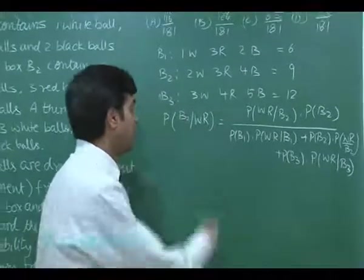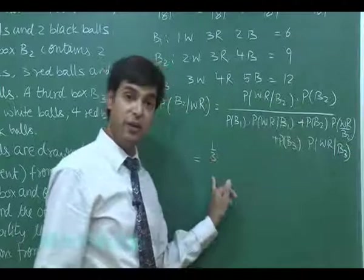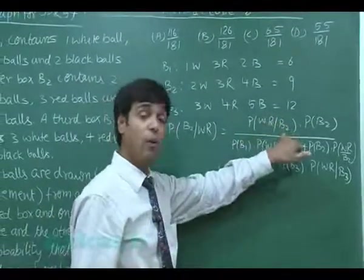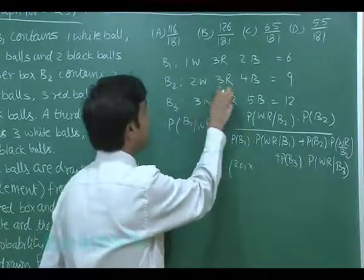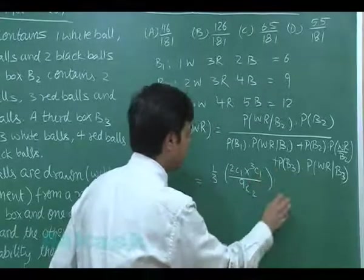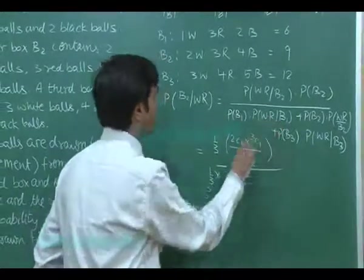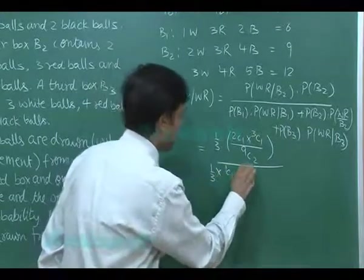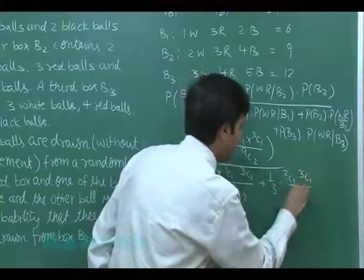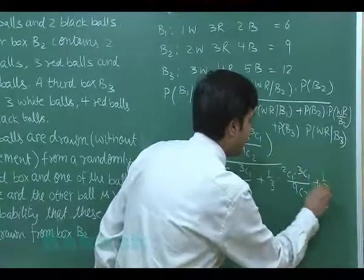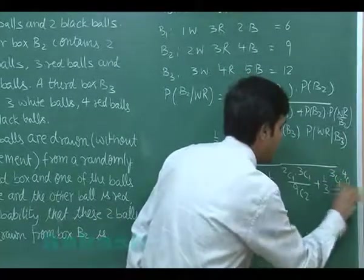Simply substitute this data. Probability of getting box 2 that is simply 1 by 3. White and red from box 2, B2 means 2C1 into 3C1 divided by 9C2 whole divided by probability of box B1, 1 by 3 multiplied with 1C1 3C1 upon 6C2 plus 1 by 3 into 2C1 3C1 upon 9C2 plus 1 by 3 multiplied with third box white red 3C1, 4C1 upon 12C2.